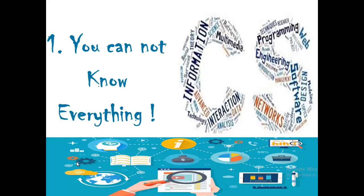First, remember that being a computer science student you cannot know everything, and don't try to learn everything. Computer science is a very diverse field with different sub-branches and dimensions. You cannot be an expert of everything — you cannot be a programmer and at the same time a database developer, or a graphic designer as well as a system analyst and software engineer. Try to identify what you are good at and work according to your field of interest.